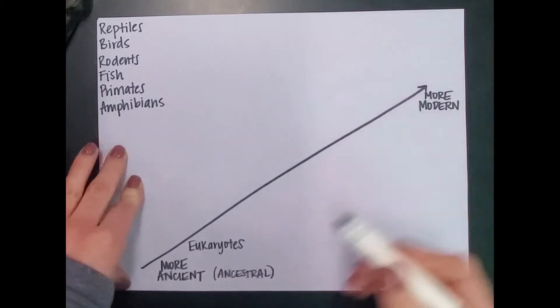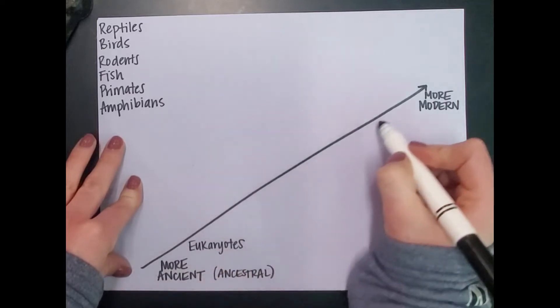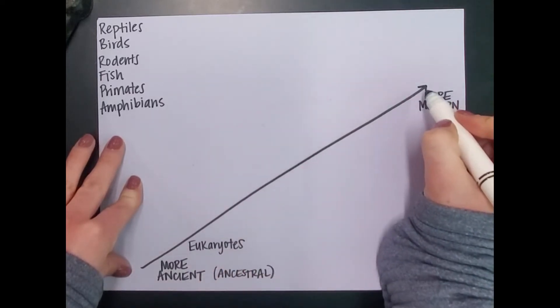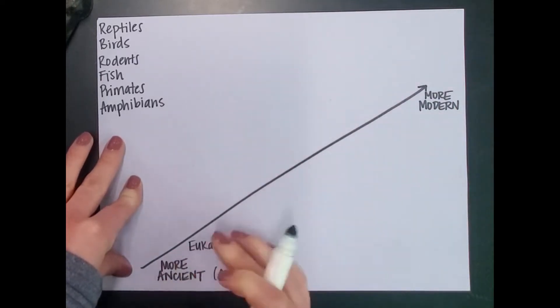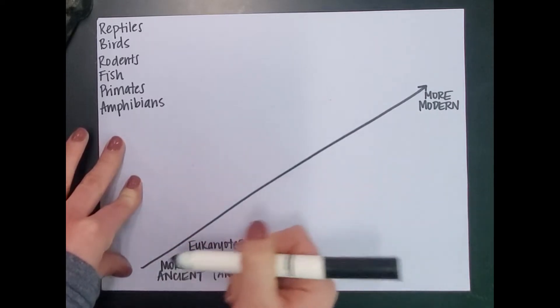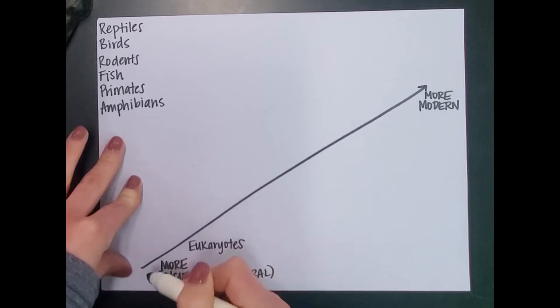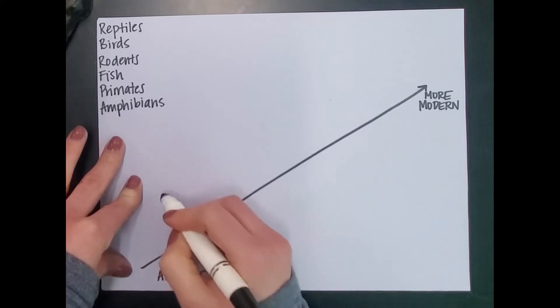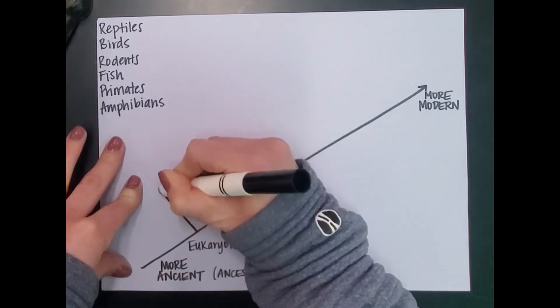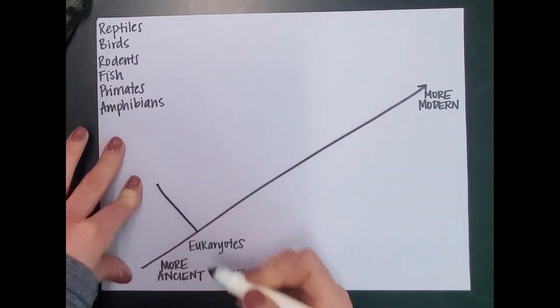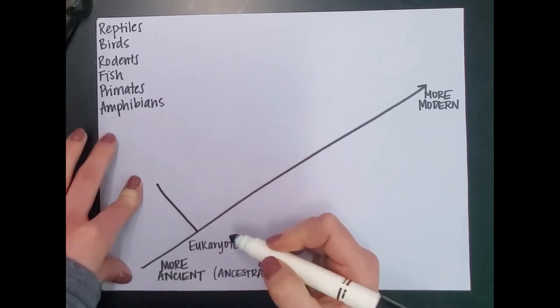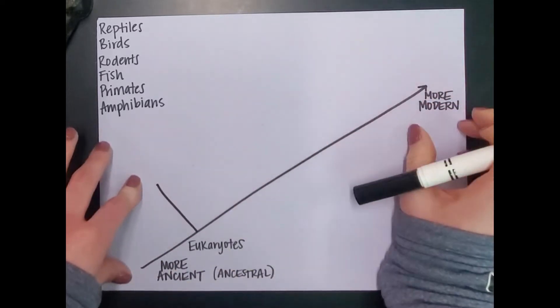This is basically saying that time is moving this direction. Things that have common ancestry are going to be further back this way, or this would be the common ancestor way down at the bottom here. And then as time goes on, evolution occurs, causing branches to appear. For example, a branch may appear there. And then time keeps moving on, we have another branch appear there. So that's how we're going to construct this cladogram.